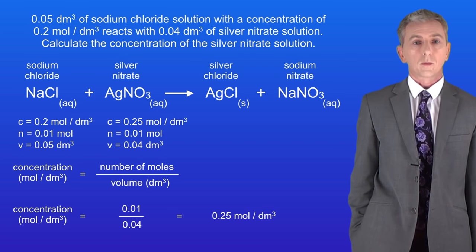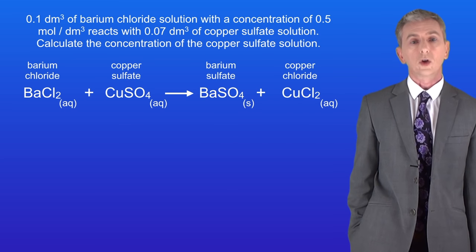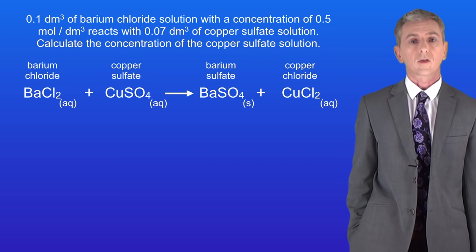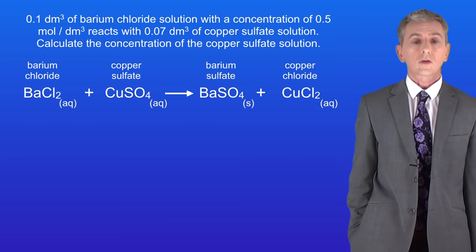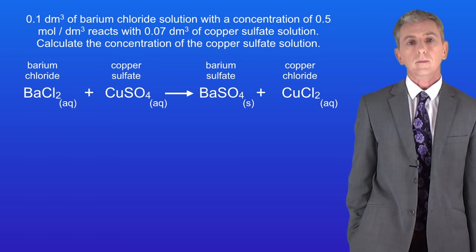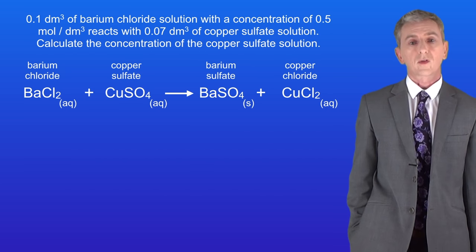Here's a question for you. 0.01 decimetres cubed of barium chloride solution with a concentration of 0.5 moles per decimetre cubed reacts with 0.07 decimetres cubed of copper sulphate solution. Calculate the concentration of the copper sulphate solution. Pause the video and try this yourself. From the equation we can see that one mole of barium chloride reacts with one mole of copper sulphate — we'll be using that information later.